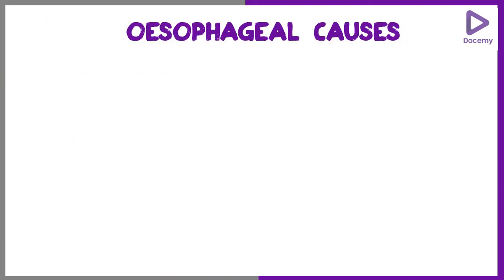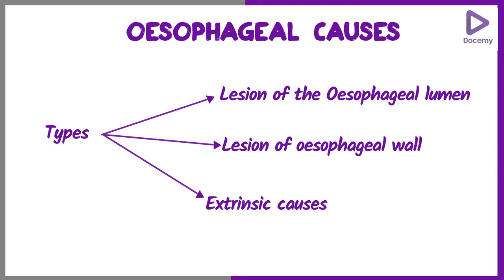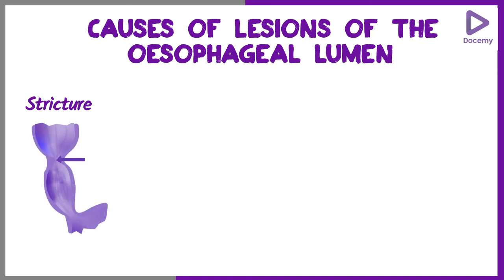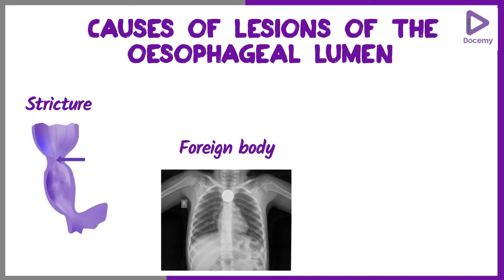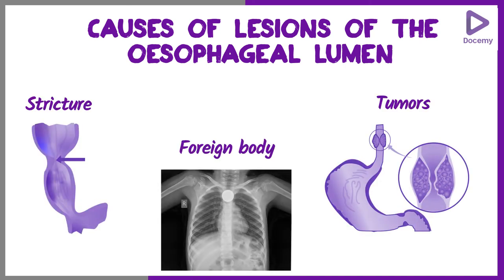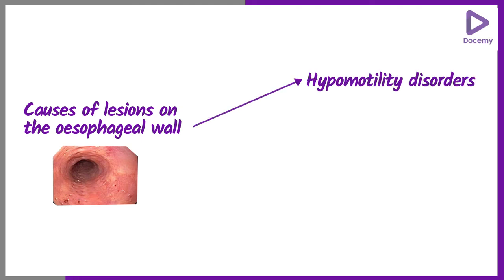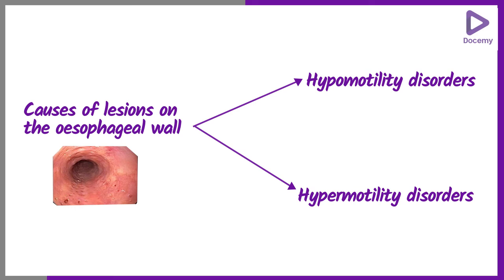The esophageal causes of dysphagia can be three types: lesions of the esophageal lumen which include stricture, foreign body, and tumours of the esophagus; and lesions of the esophageal wall which can be divided into hypomotility disorders or hypermotility disorders.